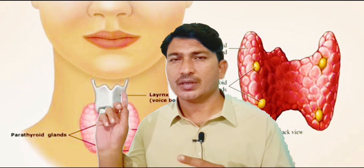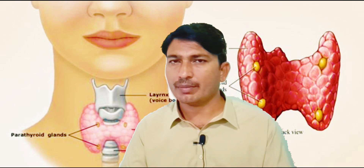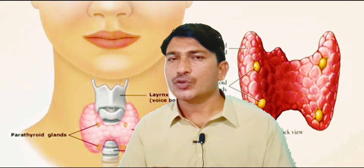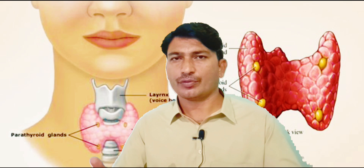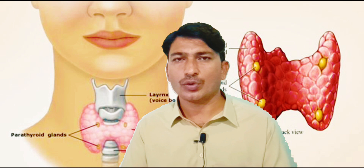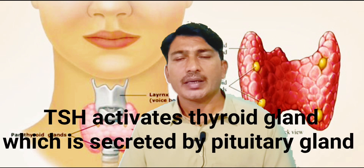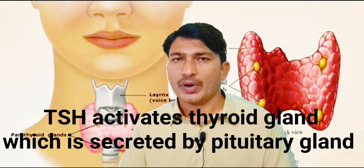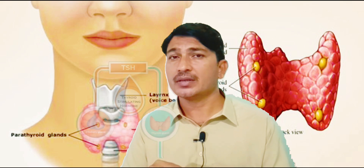Here you can see in this picture — this is the thyroid gland. Thyroid gland is important because it controls and maintains all the metabolic activities and breaking down of food happening inside our body. Thyroid gland is activated by the hormone of the pituitary gland called TSH, or thyroid stimulating hormone. This hormone is released by the pituitary gland and acts upon the thyroid gland to activate it.